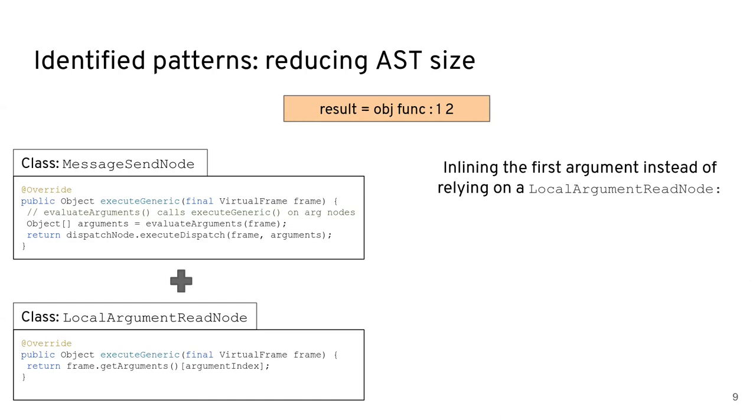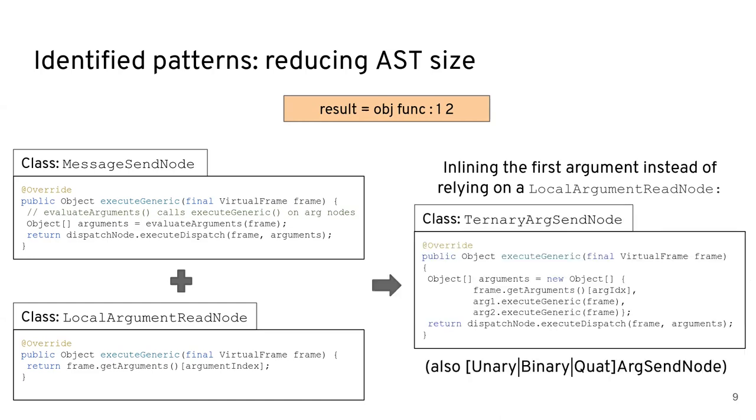which looks like this. All the behavior of a local argument read node is essentially just getting the frame, getting the arguments and getting the argument at the correct index to just return that. So our idea was just to inline the first argument whenever there's a message send that has this shape, instead of relying on an extra local argument read node.